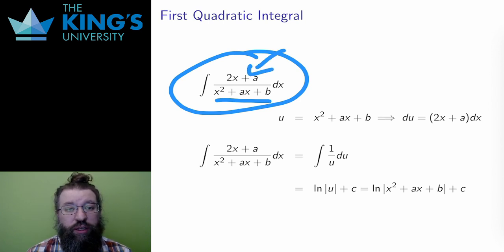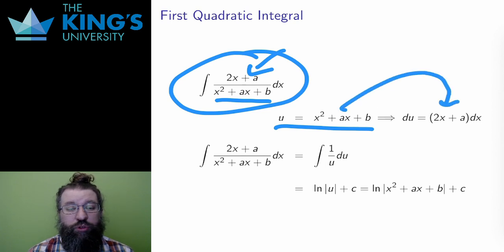And a and b are again any real constants. This integral is perfectly set up for the substitution u equals x squared plus ax plus b. The derivative of the substitution is 2x plus a, so du is equal to 2x plus a dx.